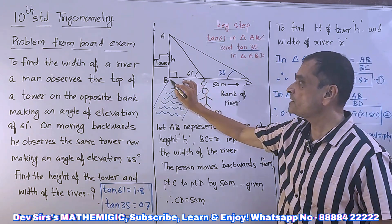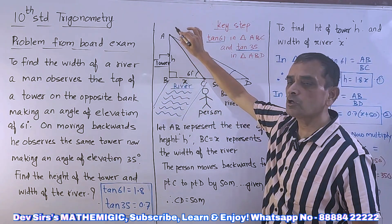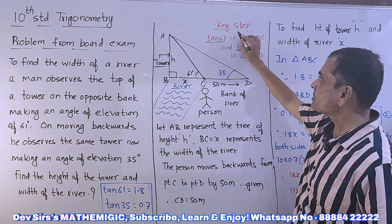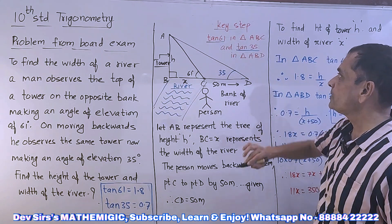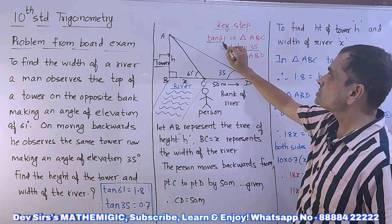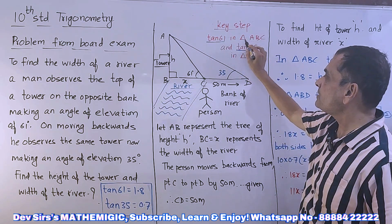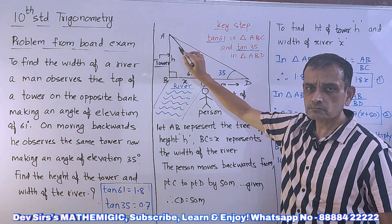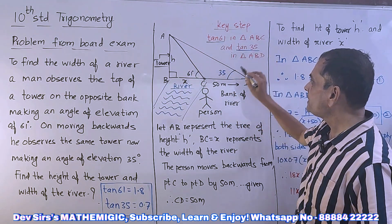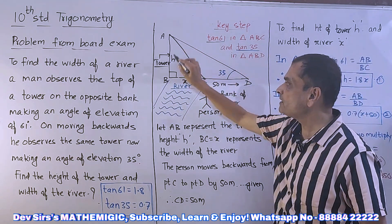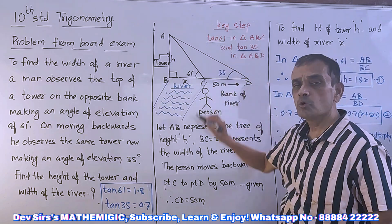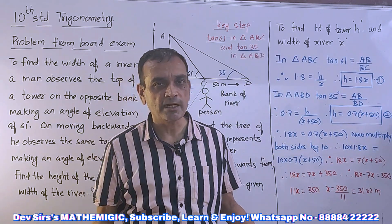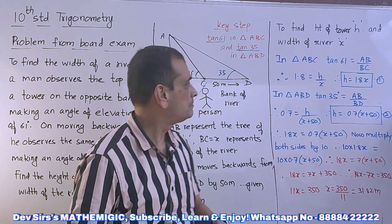So we have called BC as x and height of the tower as h. Now the key step: use tan 61 in triangle ABC, and use tan 35 in triangle ABD. In most of the problems we have seen, we will be using tan — you will see why now.